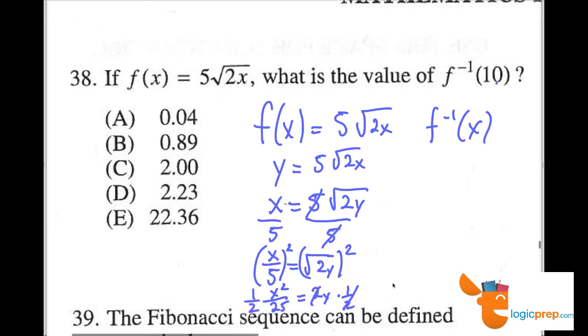And we have x squared over 50 equals y, which would be the same as the inverse function here, x squared over 50.